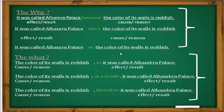So we can use 'because,' 'since,' or 'as' to express the cause. Now moving to the 'what' question for the effect: the color of its walls is reddish, so it was called Alhambra Palace. We ask 'what happened' to get the effect. The color of its walls is reddish; as a result, it was called Alhambra Palace. Or: therefore, it was called Alhambra Palace. We can use 'so,' 'as a result,' or 'therefore' to express the effect.